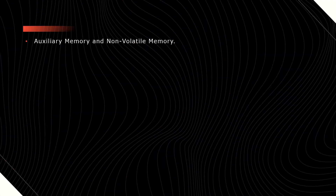Secondary memory is also called auxiliary memory, and these are non-volatile memories. Even though power is turned off, we can retrieve the data which was previously stored. So it is used to store the data permanently. Because of this reason it is also known as backup memory.